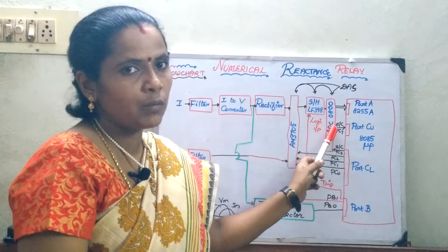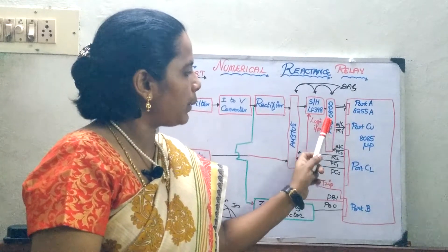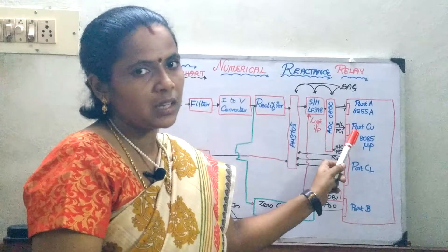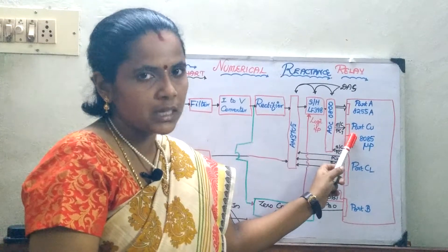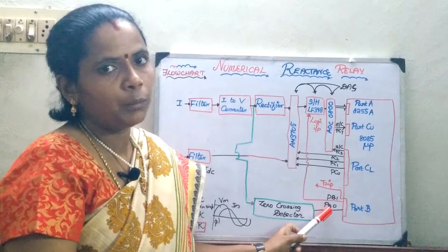Once the end of conversion is over, then what happens? It just informs the microprocessor that all the values have been digitized. So, you can accordingly issue the trip signal through the port B.